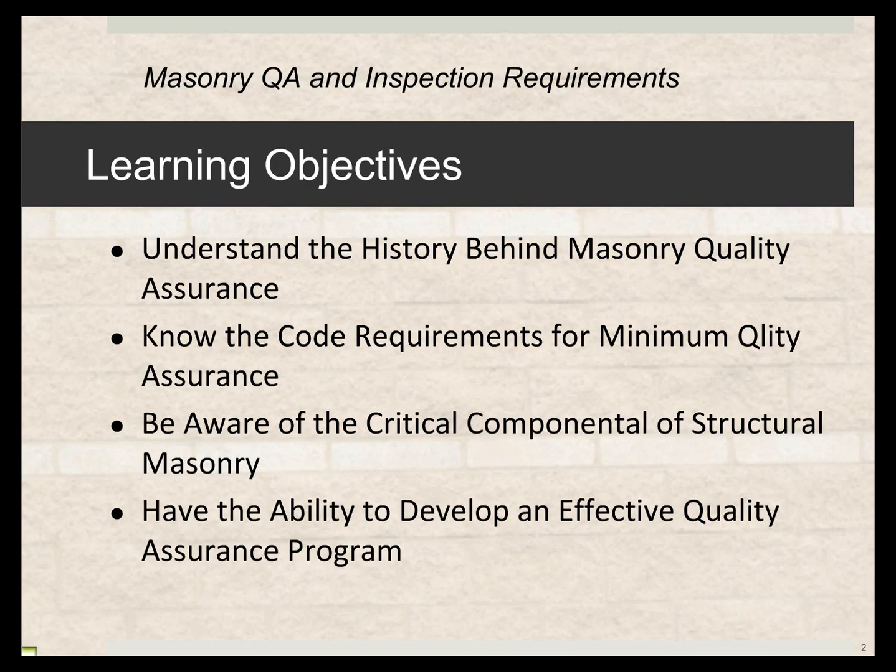We also want to have the ability to develop an effective quality assurance program. This is the easy part, because the code has already done that for you. If we know where to go in the code or in the masonry standard, we can use that to our benefit and be consistent from job to job in specifying the quality assurance program. It's a prepackaged plan that's already there and ready to put into our project documents.